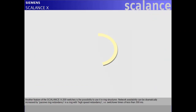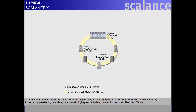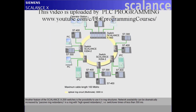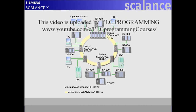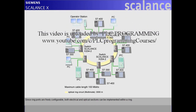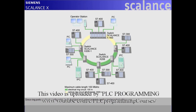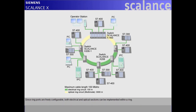Another feature of the Scalance X200 switches is the possibility to use them in ring structures. Network availability can be dramatically increased by passive ring redundancy with high-speed redundancy, i.e. switchover times of less than 300 milliseconds. Since ring ports are freely configurable, both electrical and optical sections can be implemented within a ring.